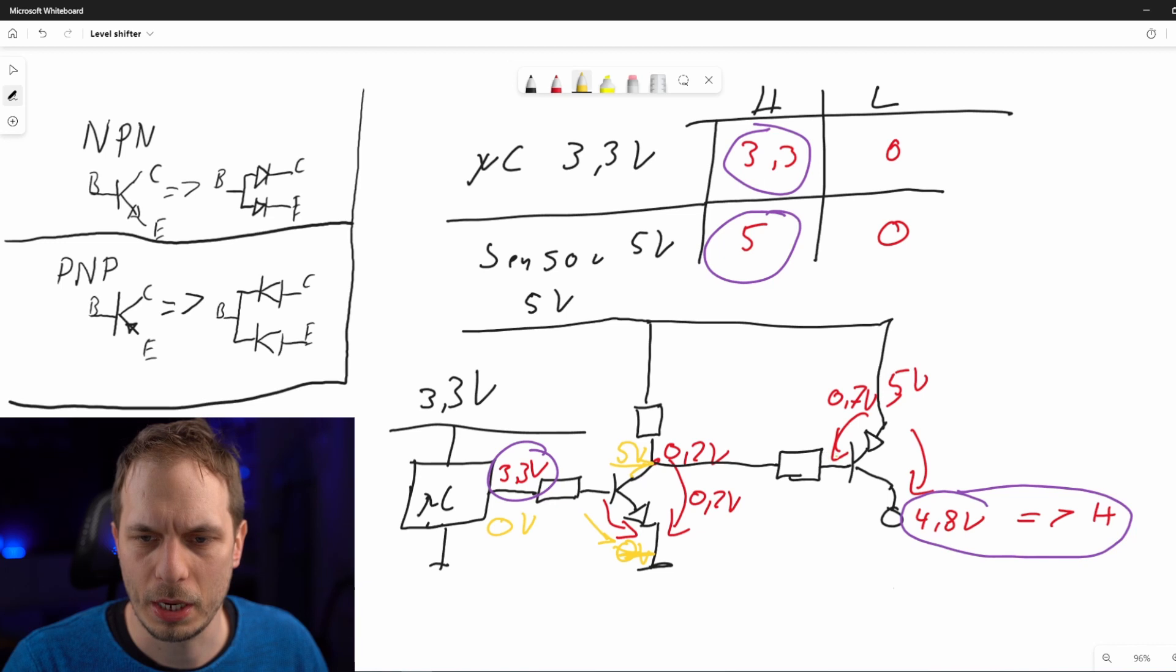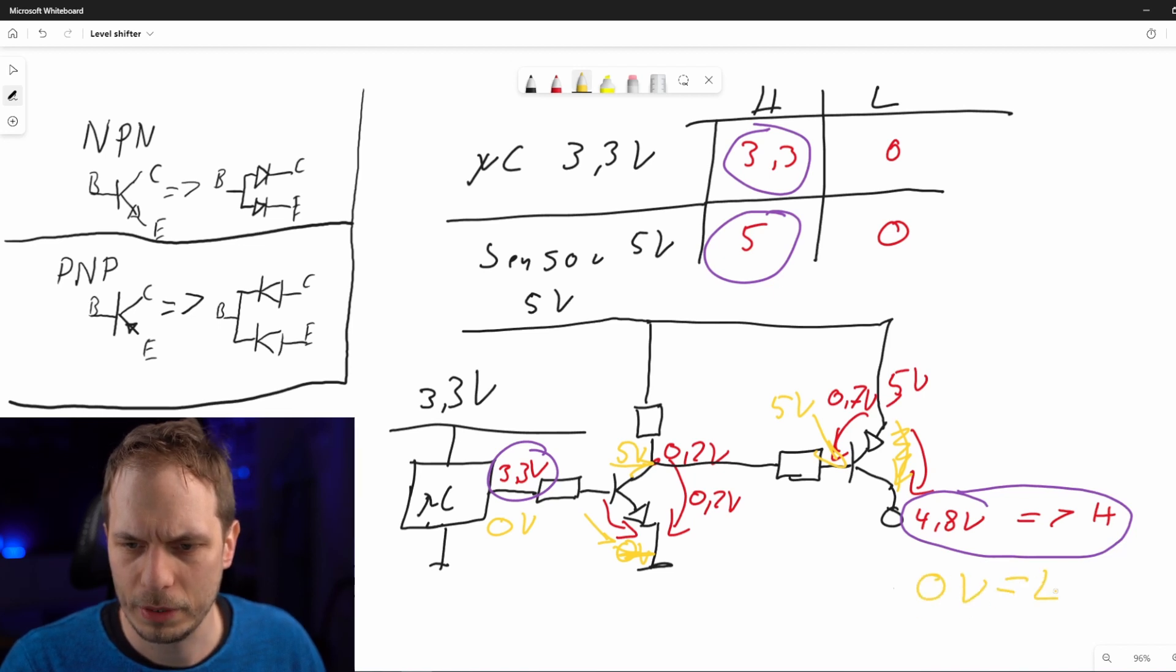This means that I also have here 5 volts, which is giving me no channel, so this one is closed. That means I don't have any voltage here. I have 0 volts at a low level, which is exactly what I want to have.